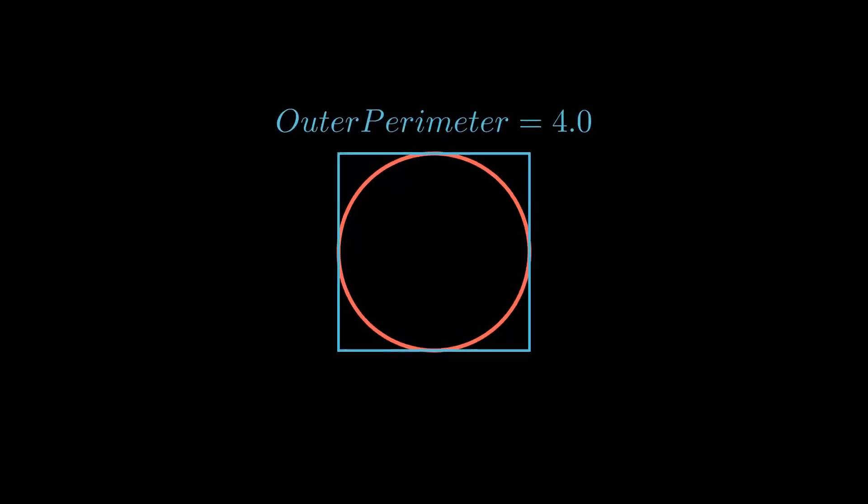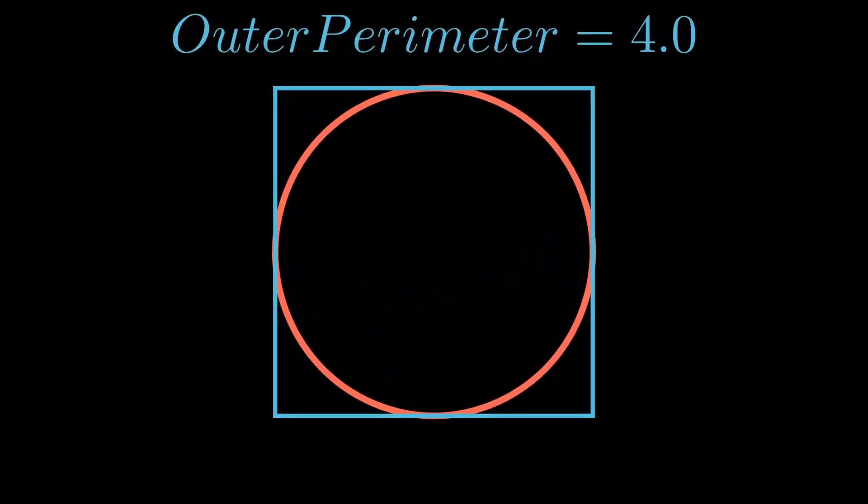Let's start with a square. We draw a square on the outside of the circle. We know that the length of each side is 1, so the entire perimeter is 4. Since the square is outside of the circle, the perimeter of the square is bigger than the perimeter of the circle. So the perimeter of the circle, aka pi, must be less than 4.